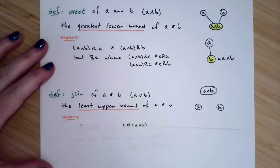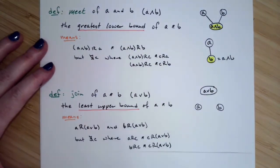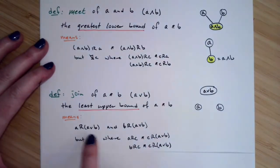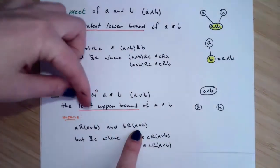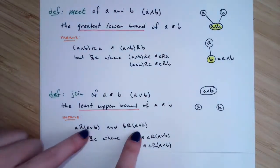Now, what does this actually mean? This means that one, A is related to the join and B is related to the join. Notice it's above them, so they have to be related to it.